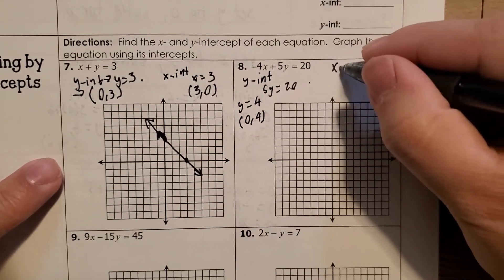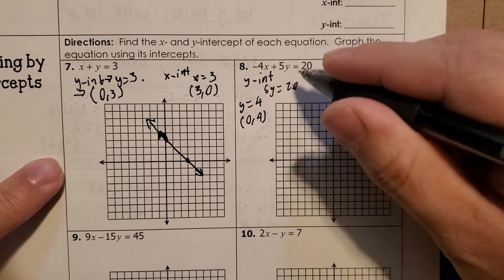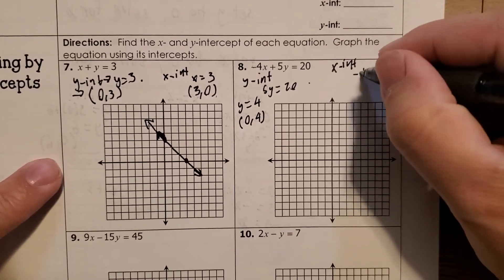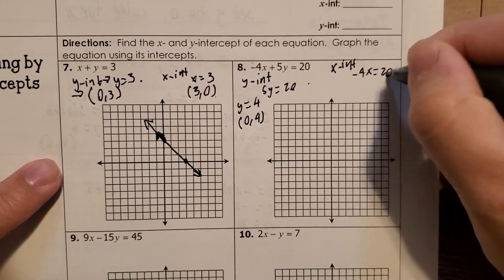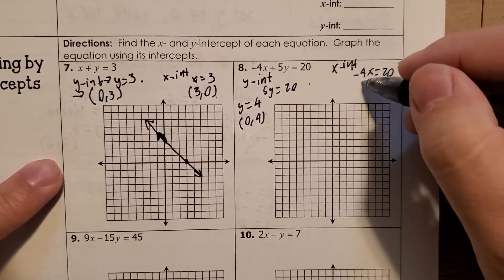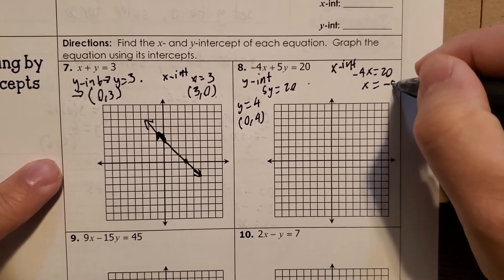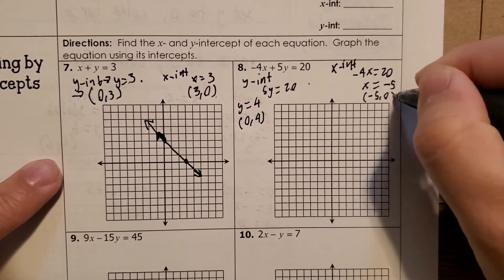And then for our x-intercept, the y part is going to be 0. So then we get negative 4x equals 20. So then we divide by negative 4. You get x equals negative 5. So you get the point negative 5, 0.